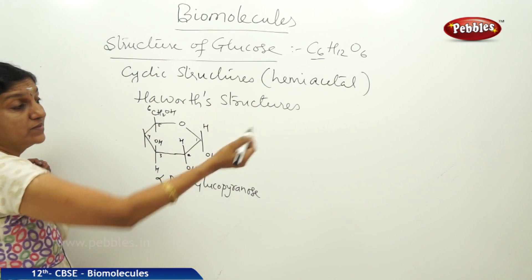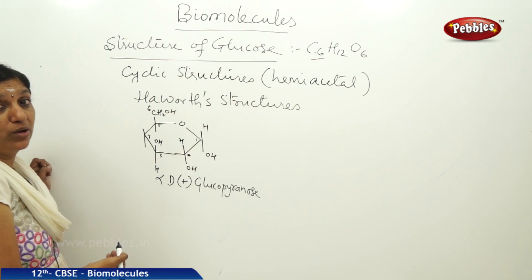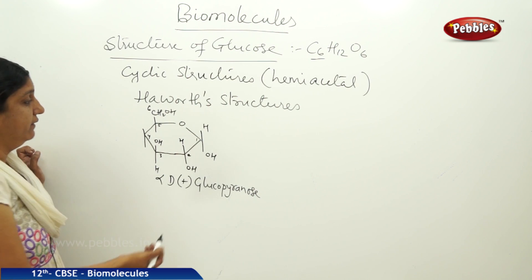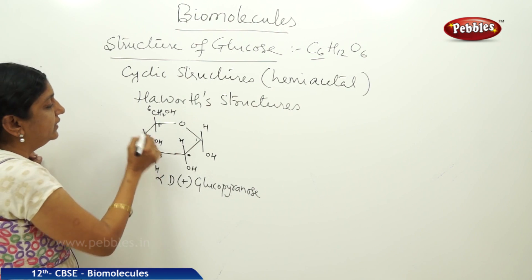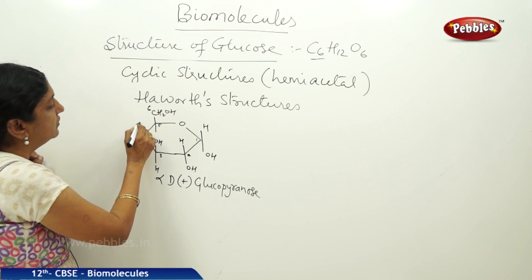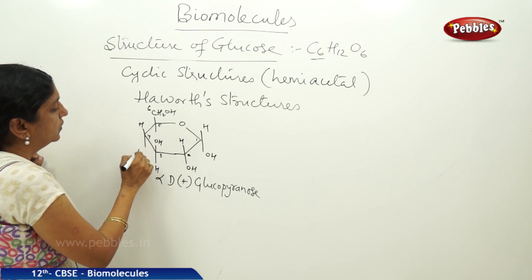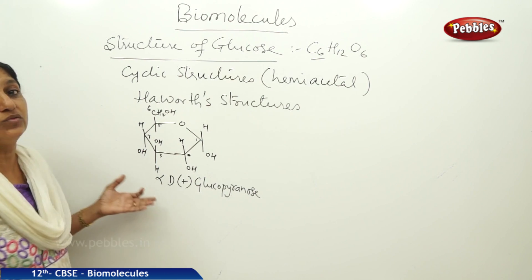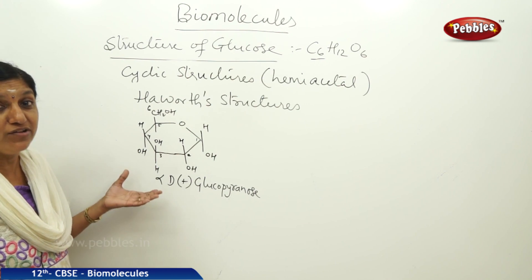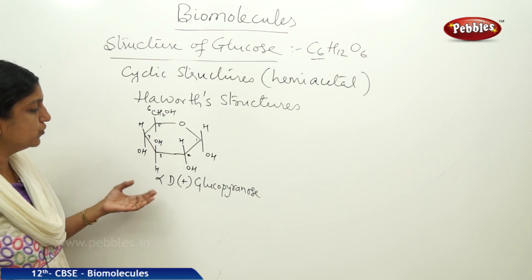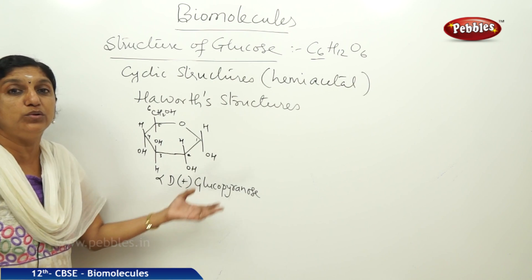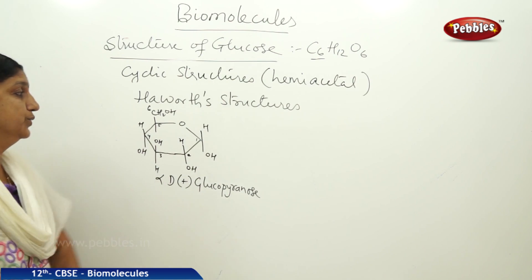You can show the ring, which is a six-membered pyranose ring resembling the organic compound pyran. And here you have HOH. So this is called the Haworth structure for alpha D plus glucopyranose.